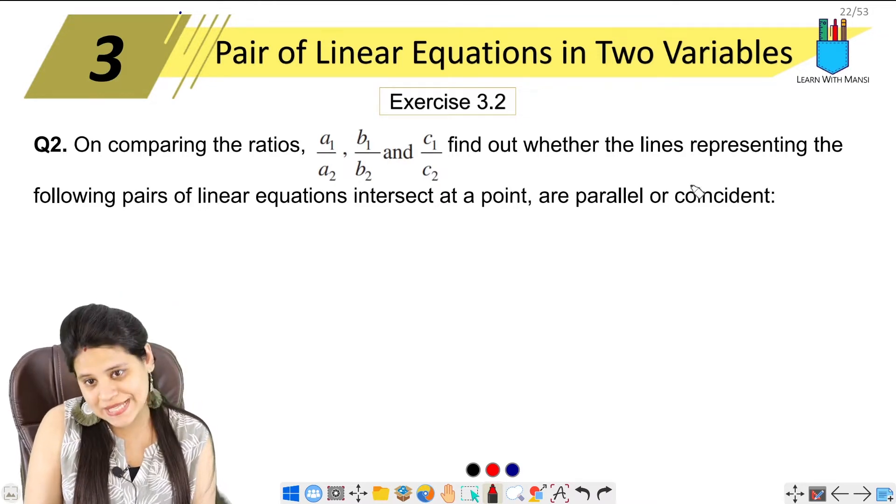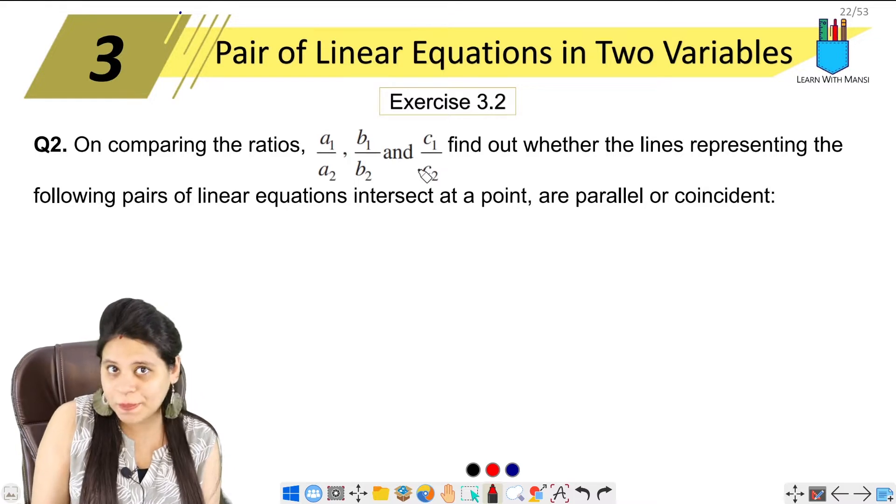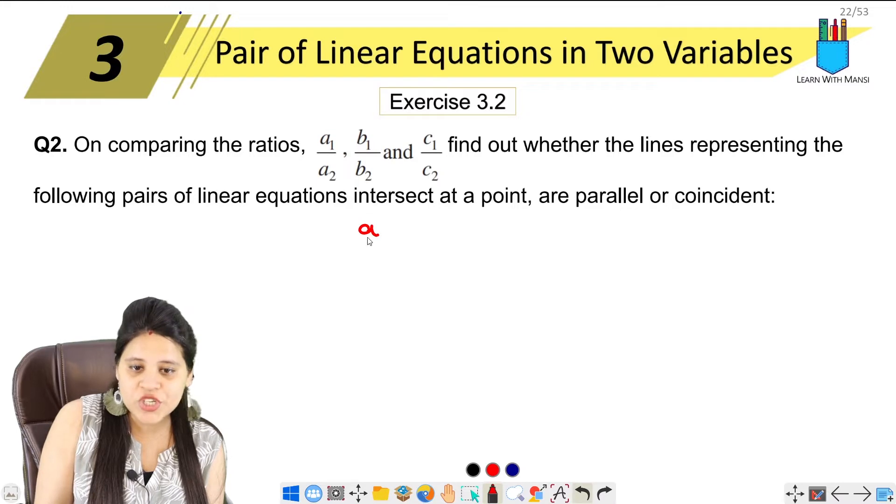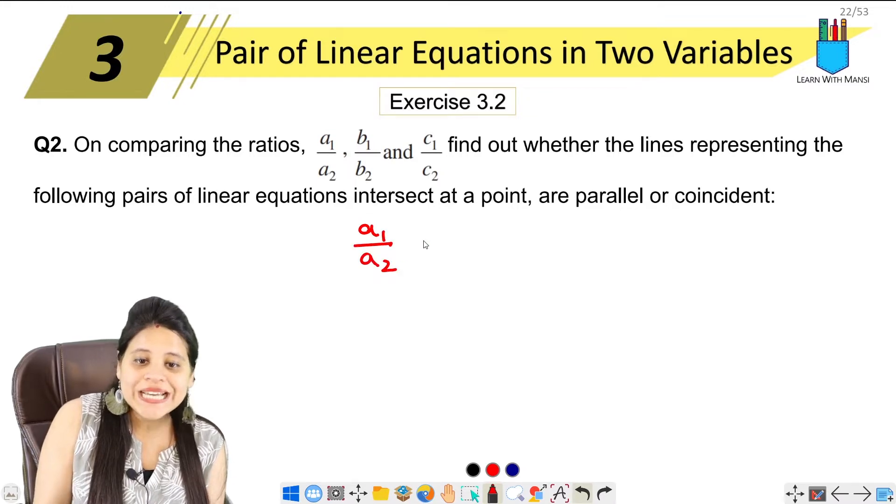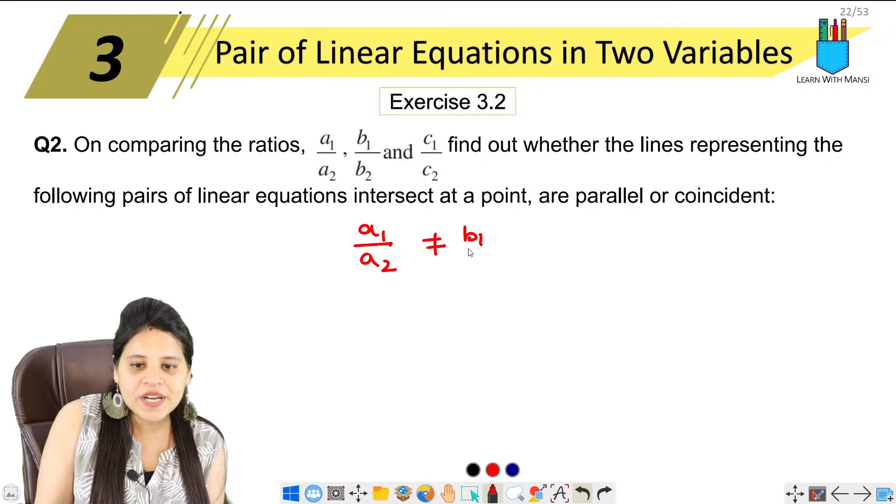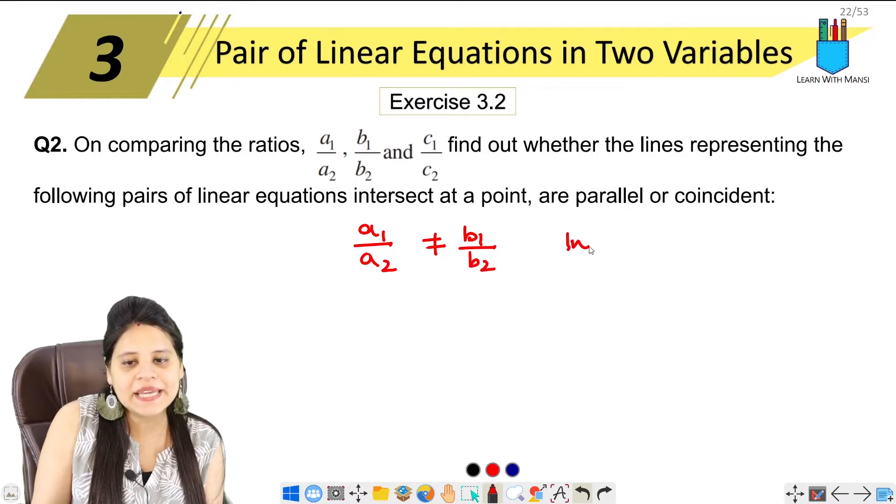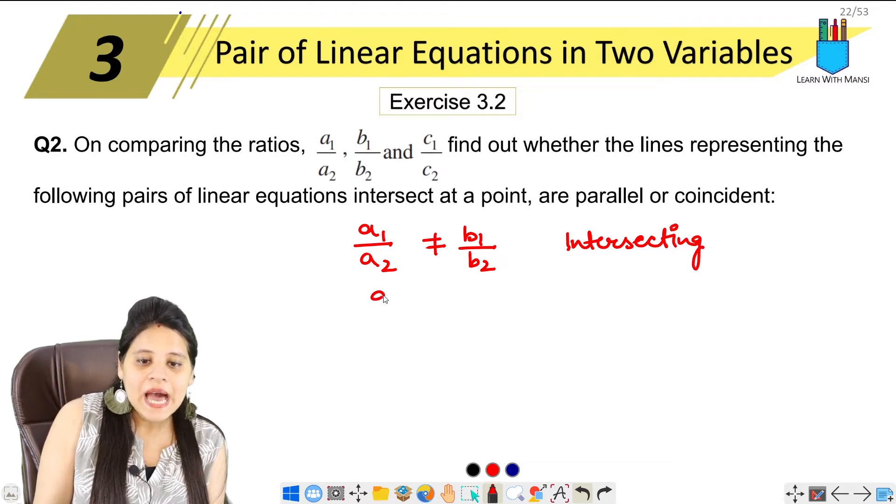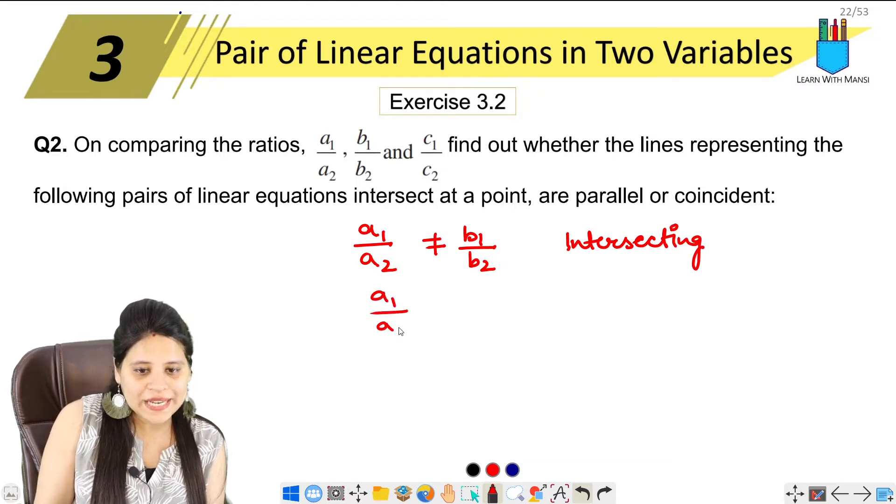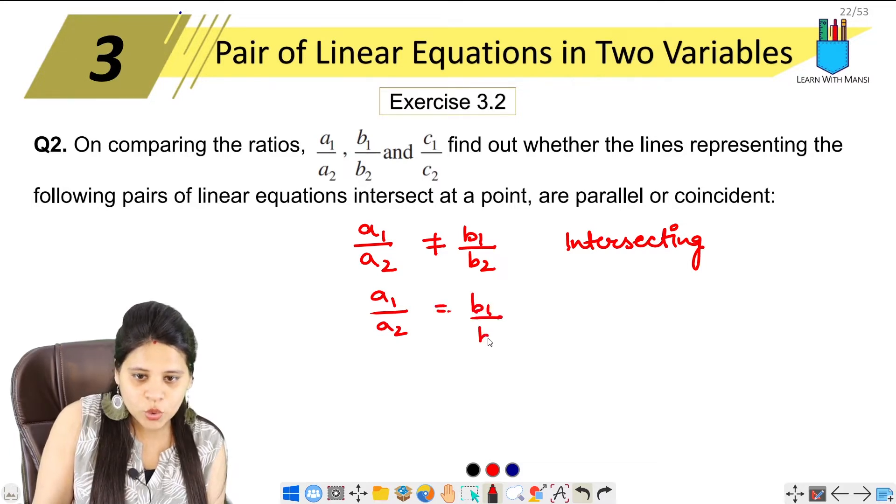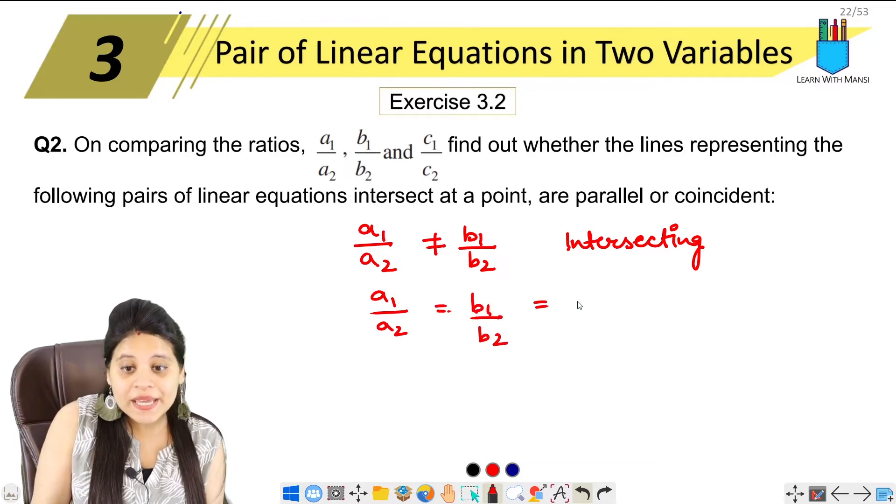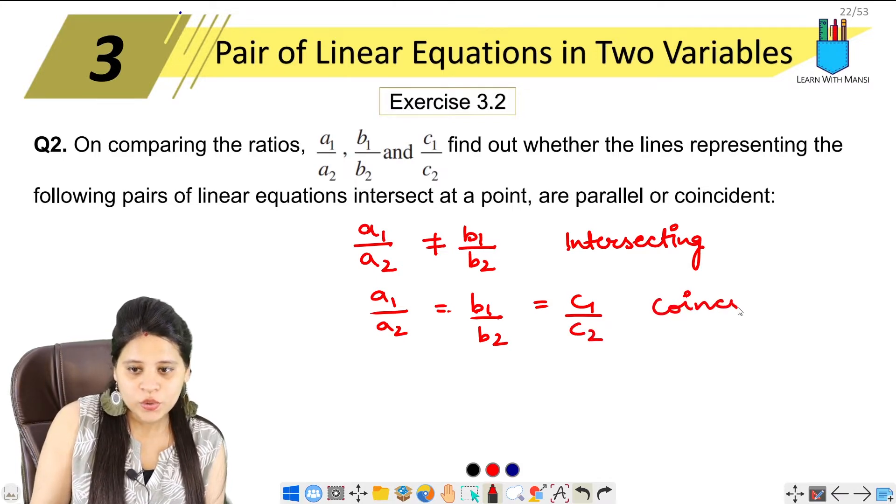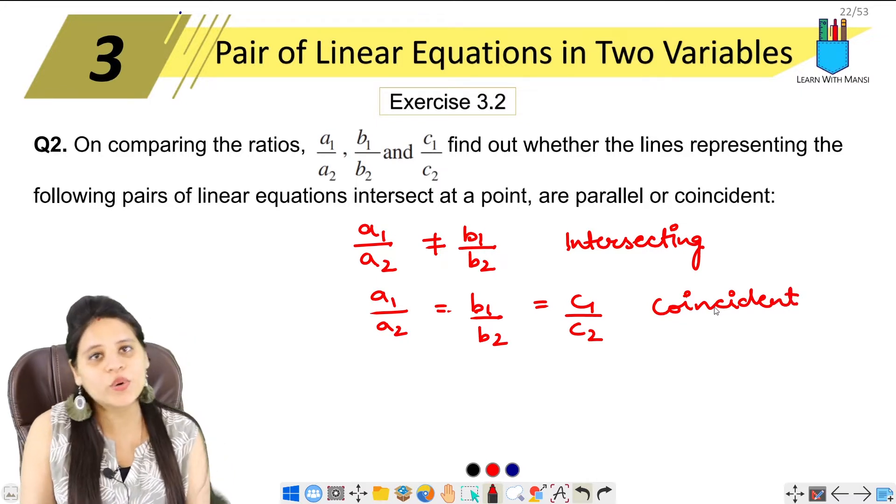So here we have studied this in our introduction. I will remind you that if we have two equations where a₁ upon a₂ is not equal to b₁ upon b₂, then we will say that the lines are intersecting. If a₁ upon a₂ equals b₁ upon b₂ equals c₁ upon c₂, then we say that these are coincident lines, meaning one will coincide with the other.